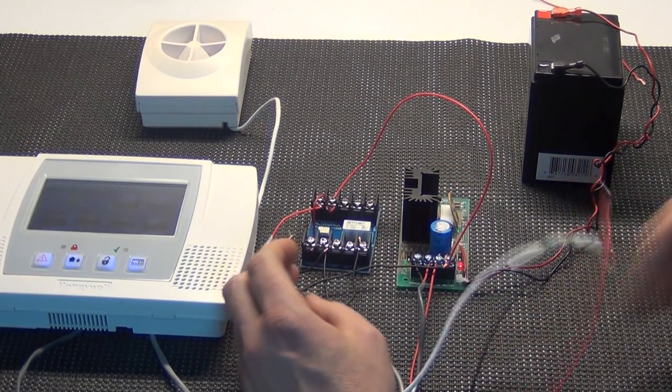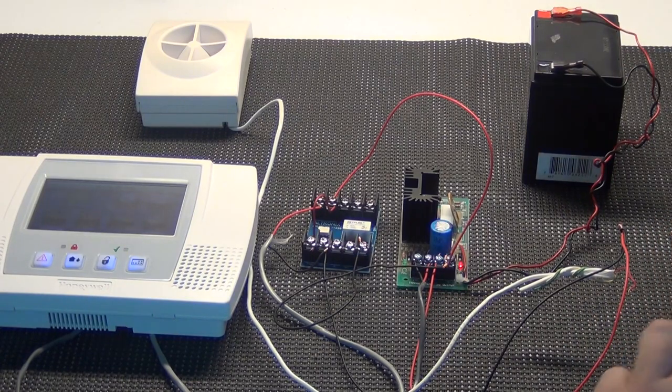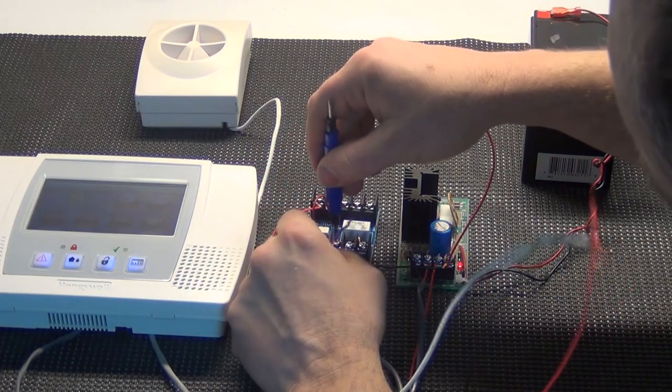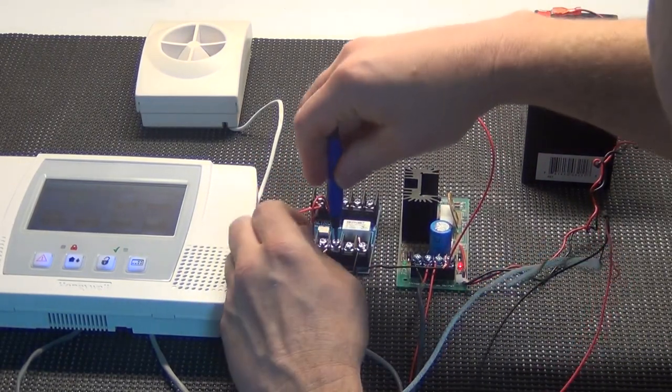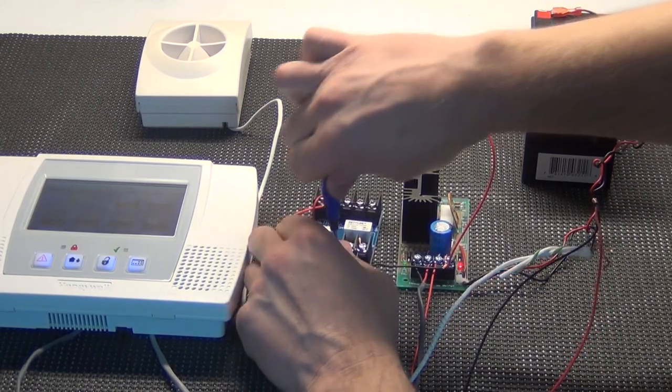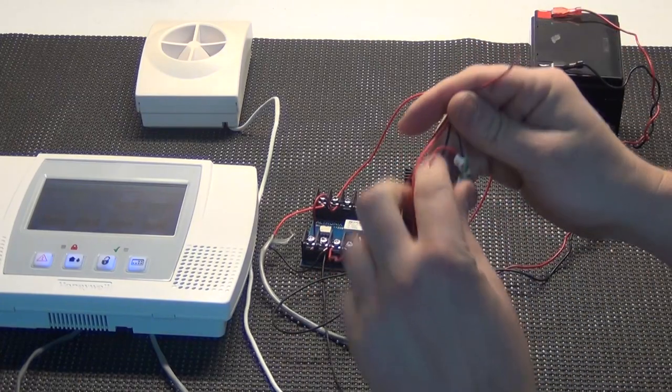And then finally, we take this last piece of wire, this lone straggler, and we put it underneath the C terminal on the ultra sensitive relay. Tighten that down. And this is going to go to our positive wire on our siren.